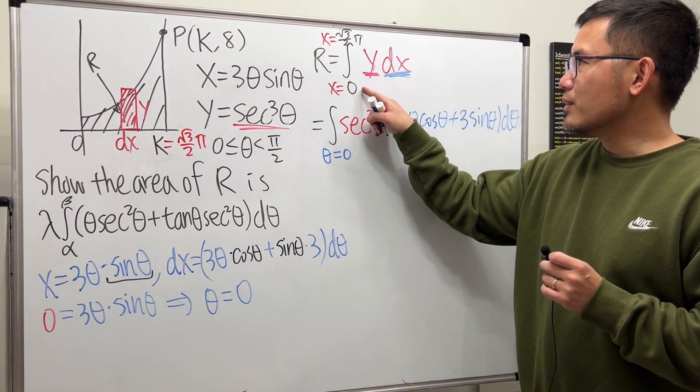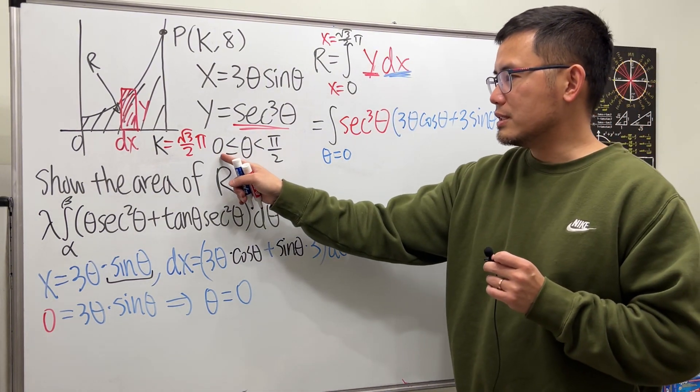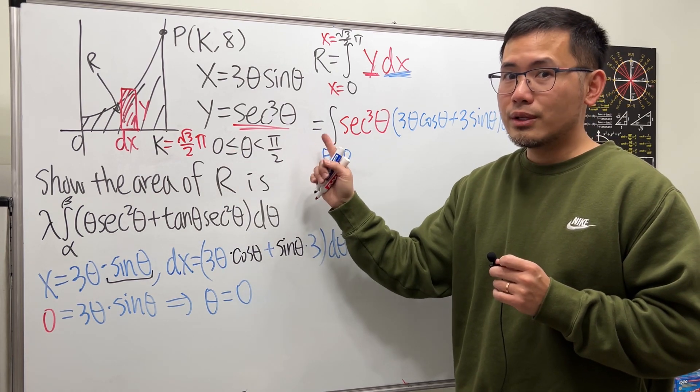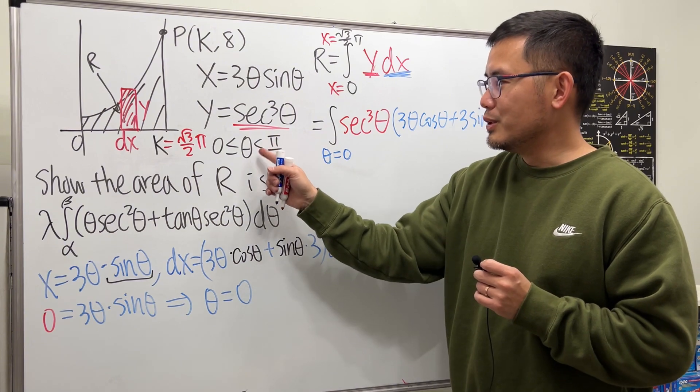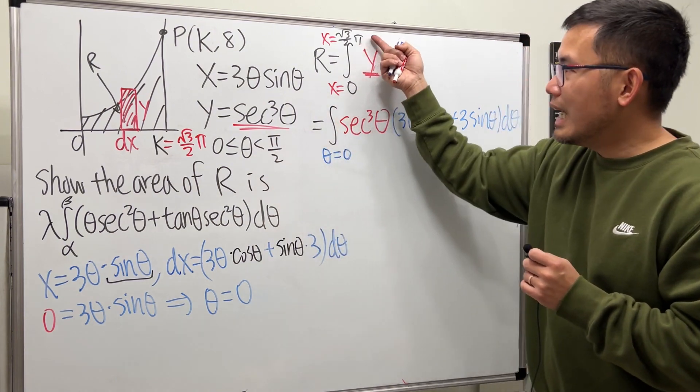So we can say theta starts at 0 and that is legitimate. Do not just say from 0 to this, and do not just use from 0 to π/2. That's why I told you earlier, do not just use the theta value - we really have to solve it.